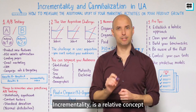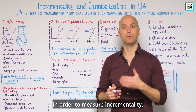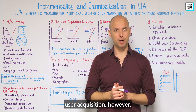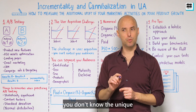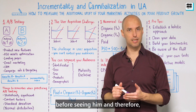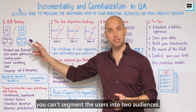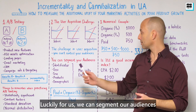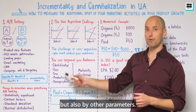Incrementality is a relative concept, and therefore we should use A-B testing in order to measure it. The unique challenge in user acquisition, however, is that you can't control your audience — you don't know the unique identifier of each user before seeing them. Luckily for us, we can segment our audiences not only by identifiers but also by other parameters, such as geo, if two countries or two cities are behaving the same.